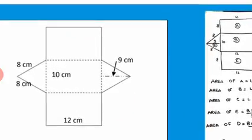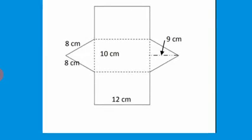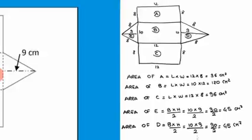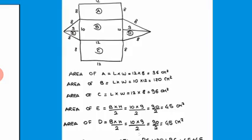Exercise number 3. We have the net of another triangular prism and want to calculate its surface area. Rectangle A has area 12 times 8 equals 96. Rectangle B has area 10 times 12 equals 120. Rectangle C has area 12 times 8 equals 96.